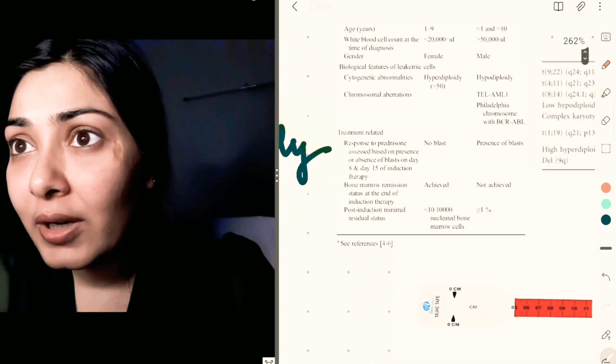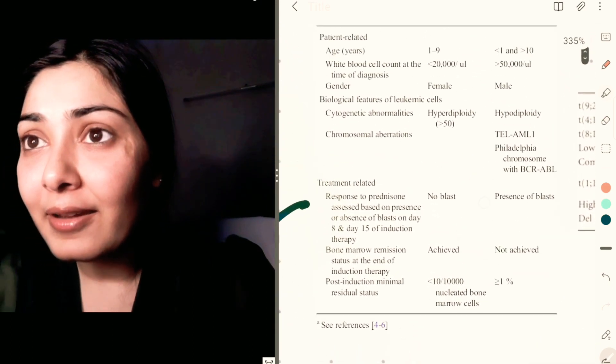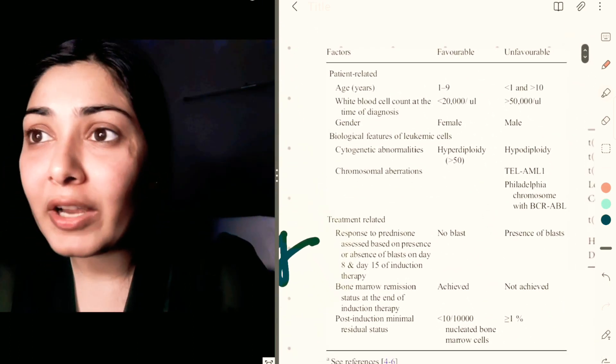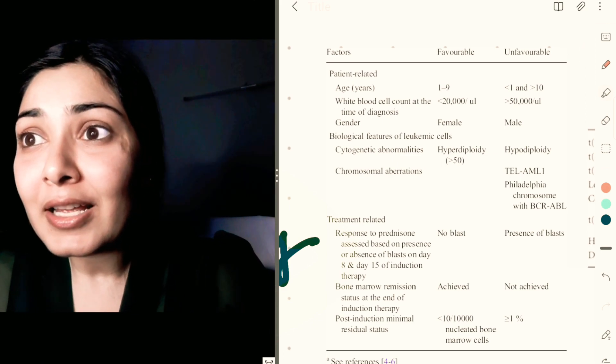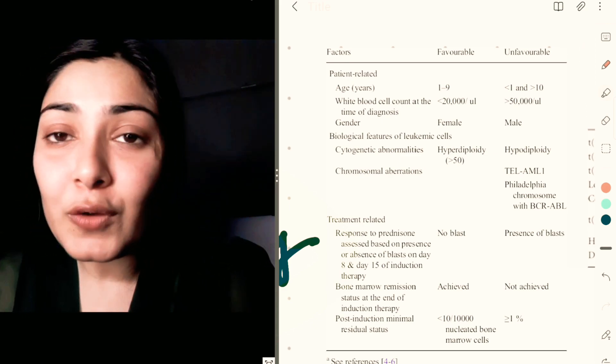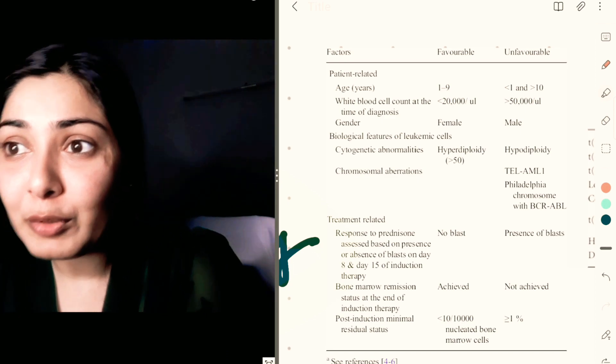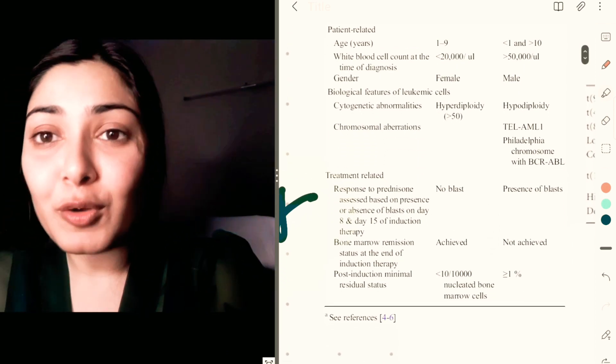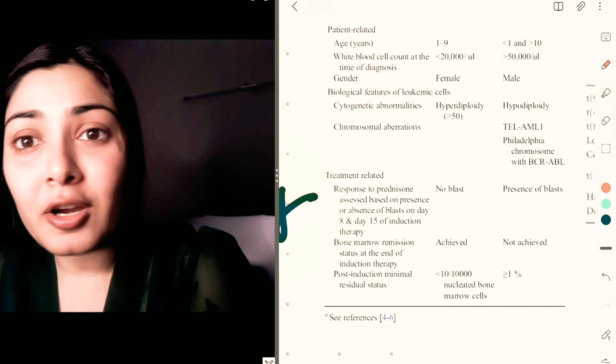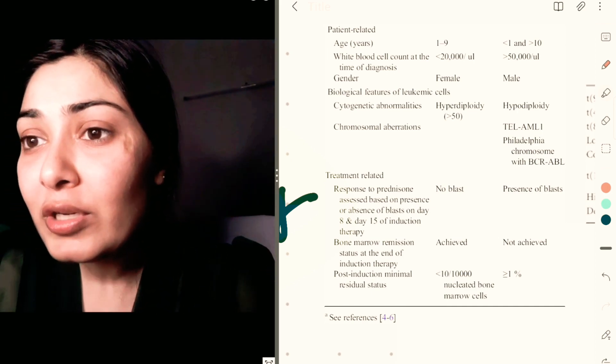Let's see the list here. The favorable factors: age between 1 to 9, counts less than 20,000, female gender, hyperploidy, no blasts in response to treatment on day 8 and day 15, achievement of bone marrow remission, and MRD (minimal residual disease) less than 1%.